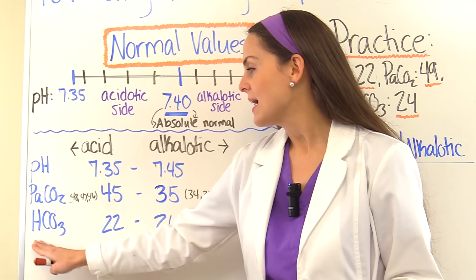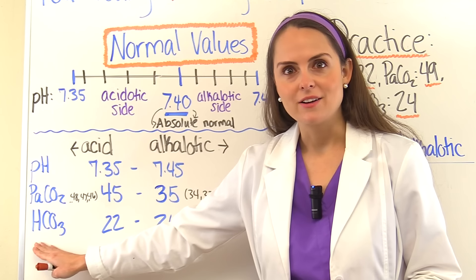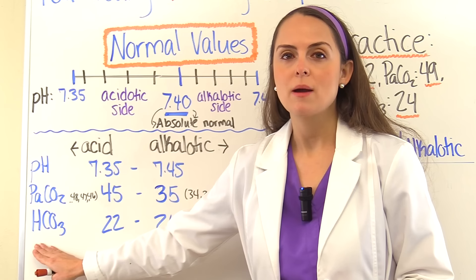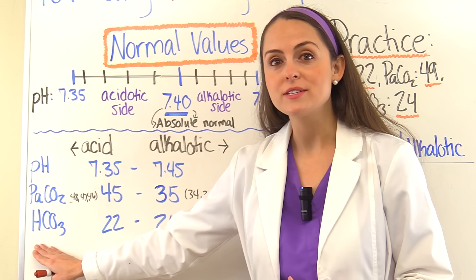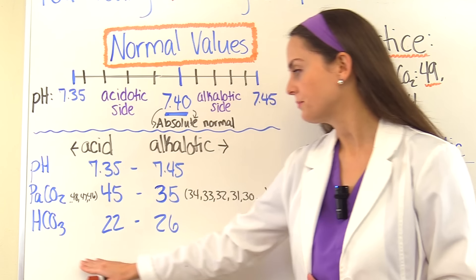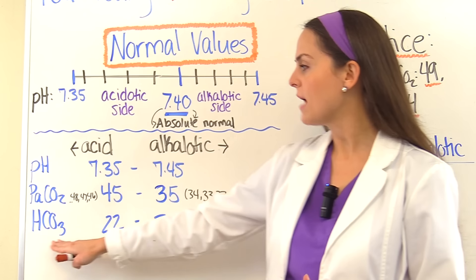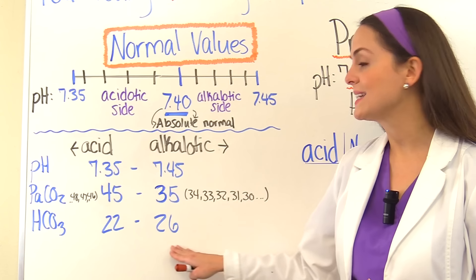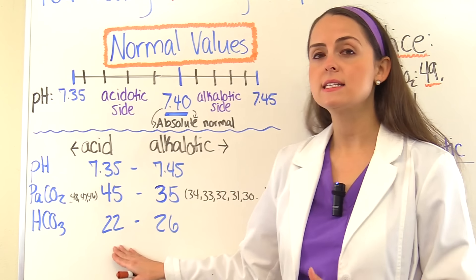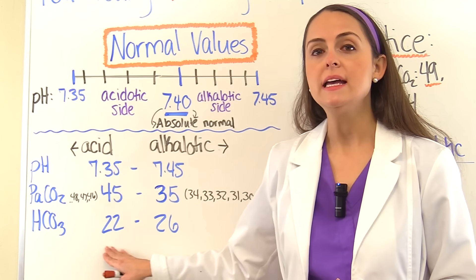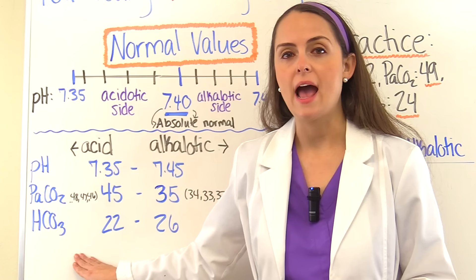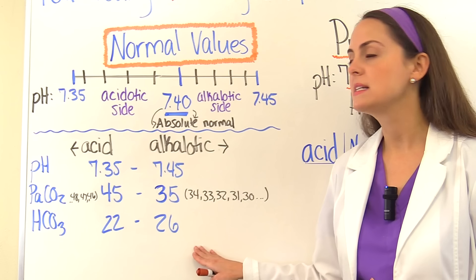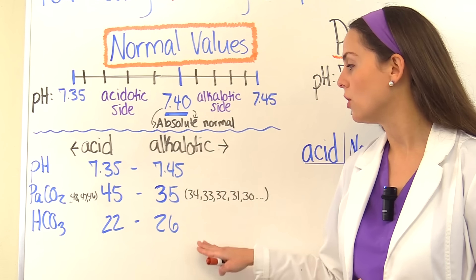The last value to remember is bicarb, the HCO3. This represents the metabolic system, hence our renal system. Normal values for bicarb are 22 to 26. Anything less than 22 is considered an acid, and anything greater than 26 is considered alkalotic.